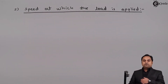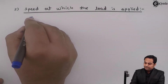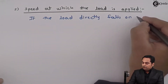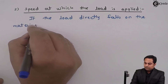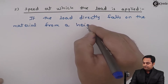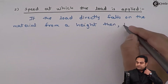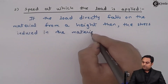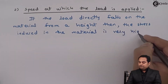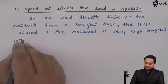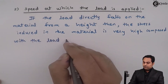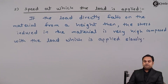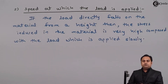Next, the speed at which the load is applied. For example, if the load directly falls on the material from a height, then the stress induced in the material is very high compared with a load which is applied slowly. So the second stress intensity factor is the speed at which the load is applied.